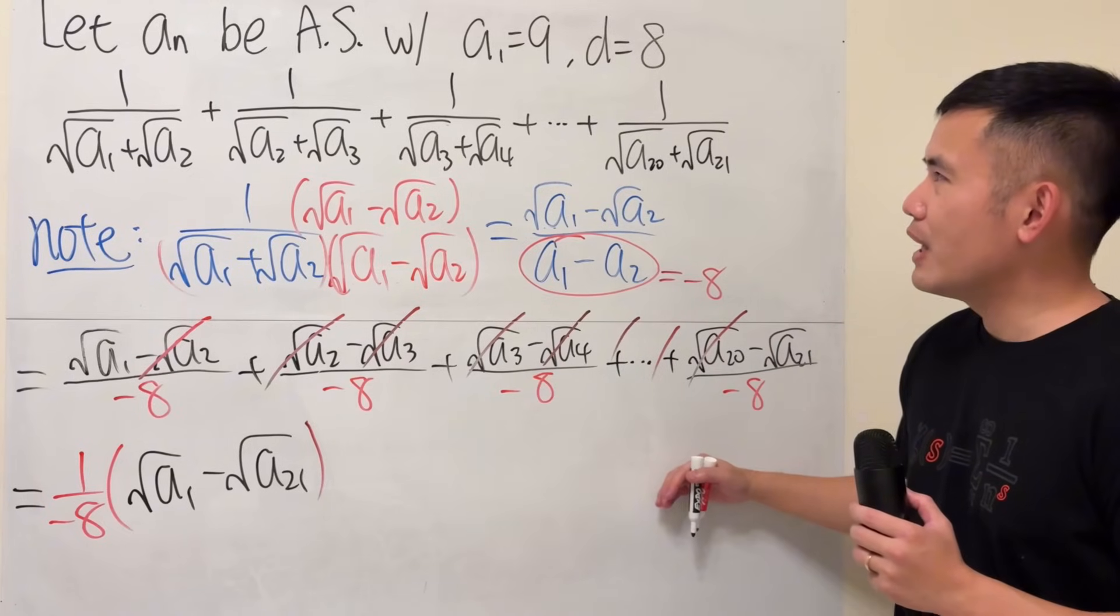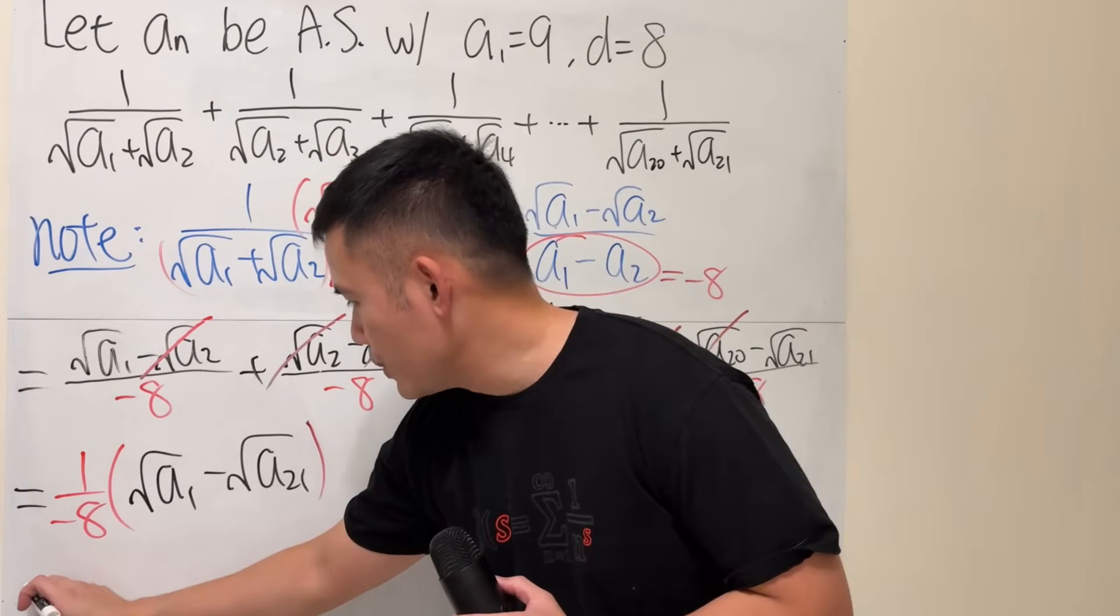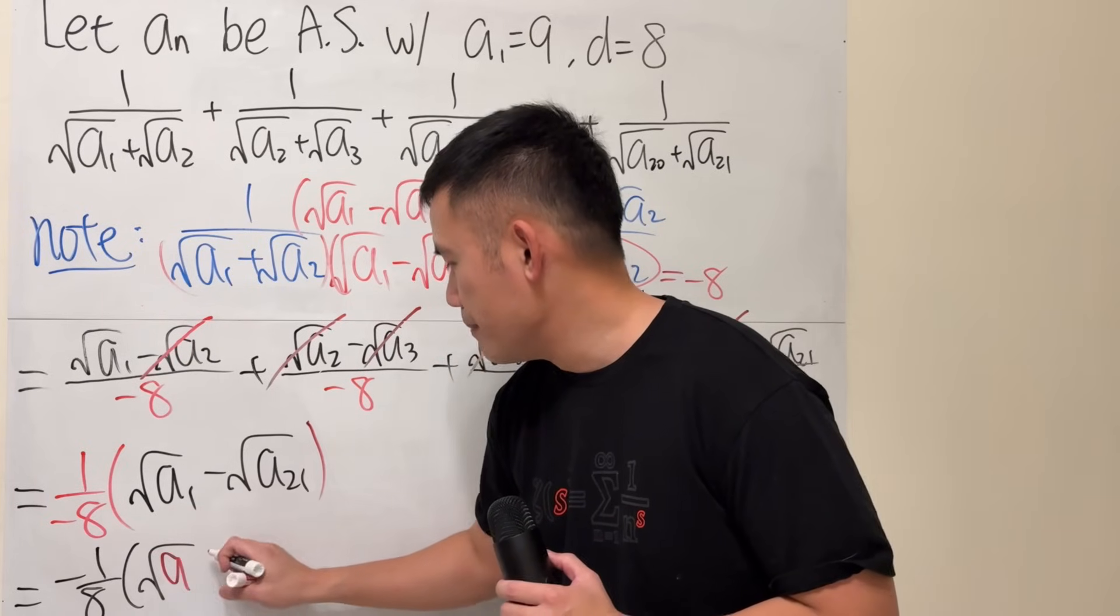Not done yet, of course. Because we still have to figure out, okay, we have a1 is 9. That's fine. So, we have negative 1 over 8 times square root of 9 minus, what's a21 though?